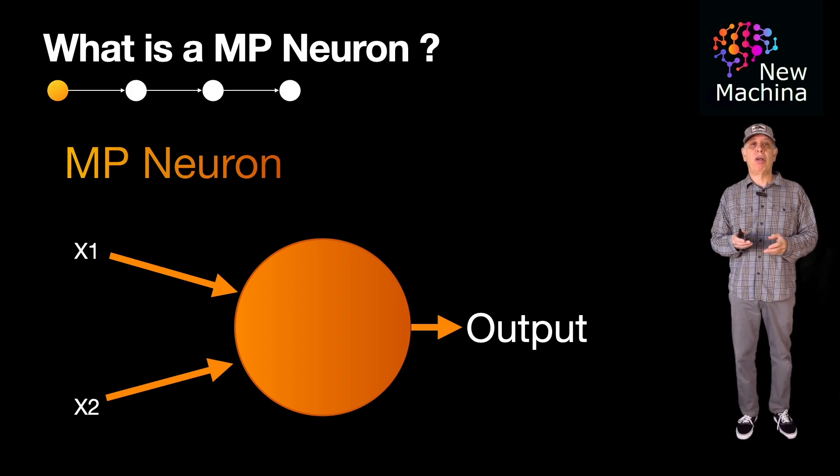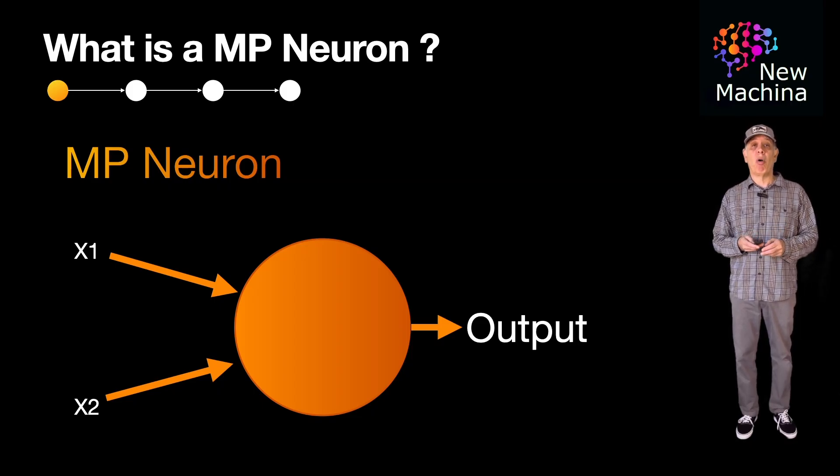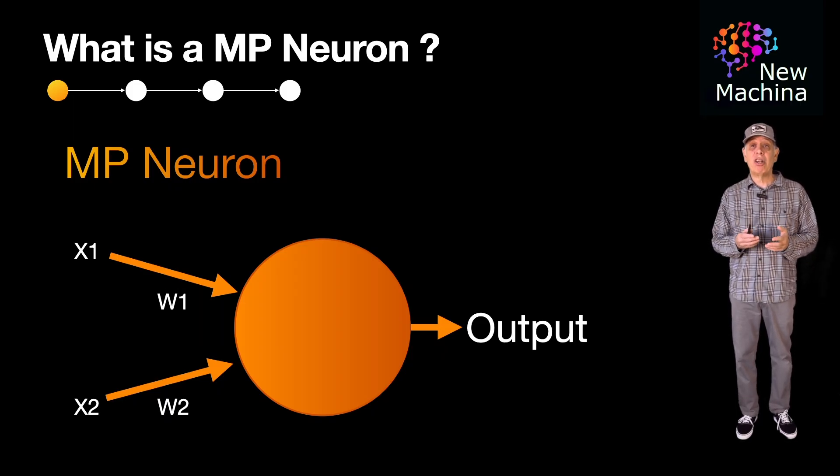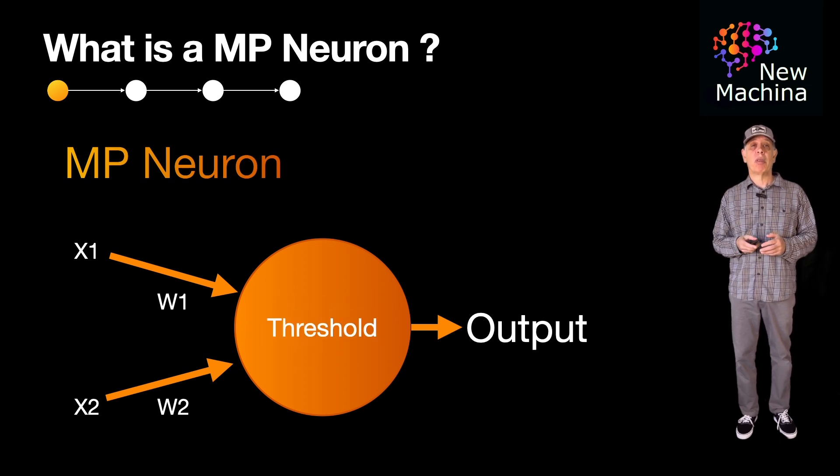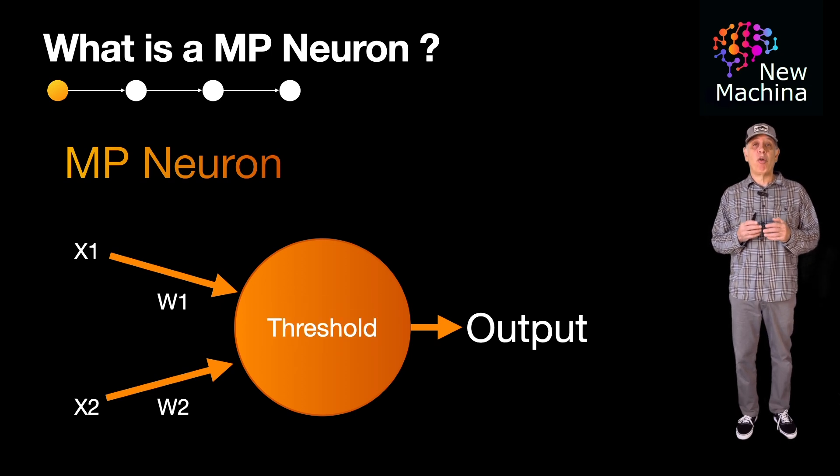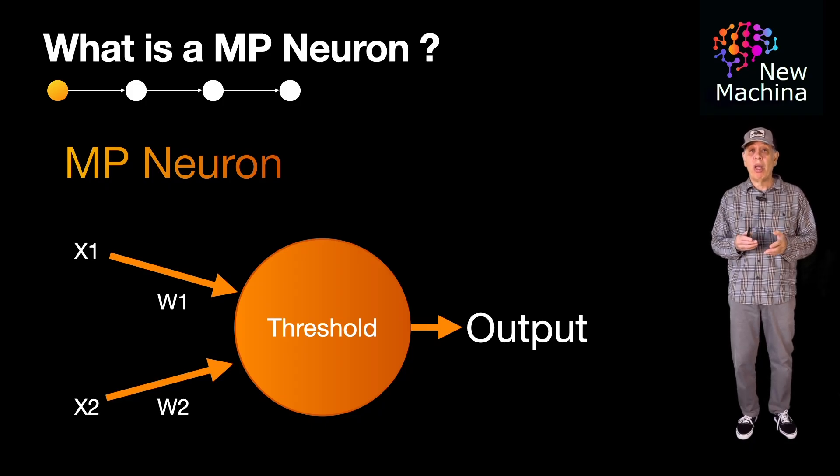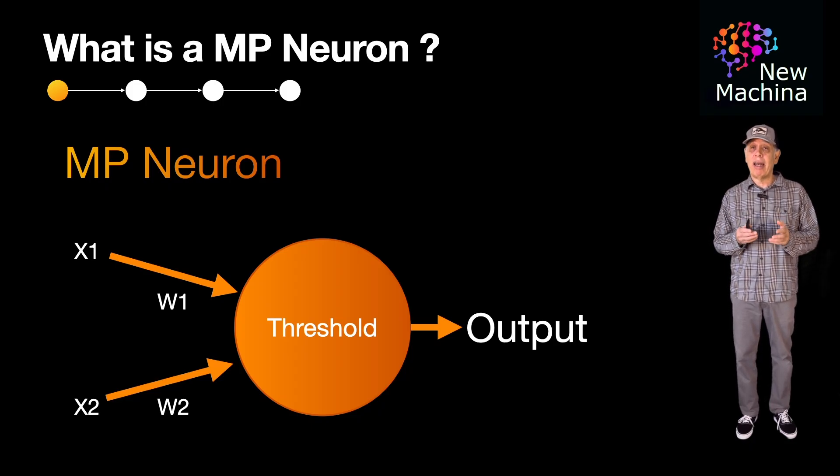Here are some key characteristics of the MP Neuron. The MP Neuron receives several binary inputs which are either 0 or 1. The MP Neuron produces a binary output of 0 or 1. Each binary input is multiplied by a weight which can be positive or negative. These weighted inputs are summed up and the total is compared to a predefined threshold. If the sum of the weighted inputs exceeds the threshold, the neuron fires and produces an output of 1. If the sum is below the threshold, the neuron does not fire and outputs 0.